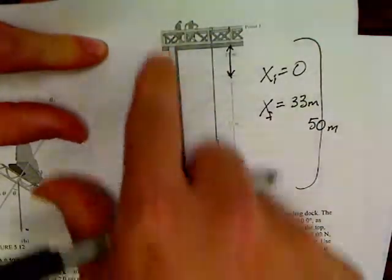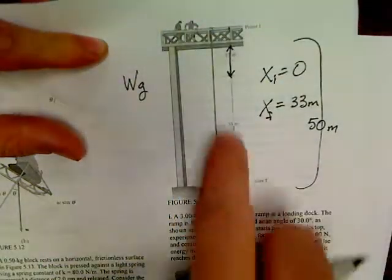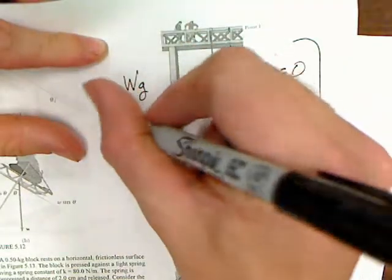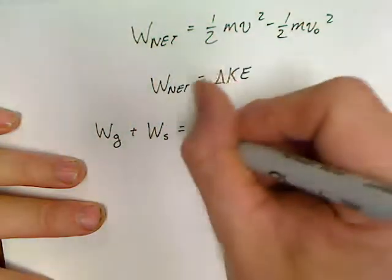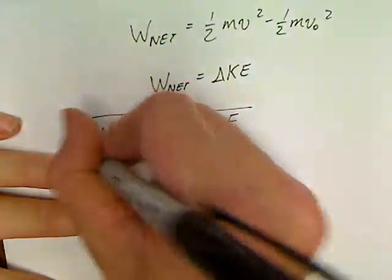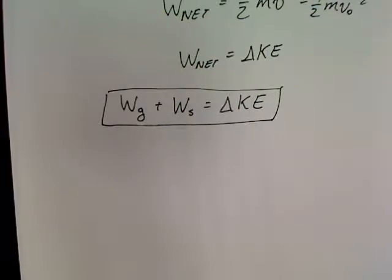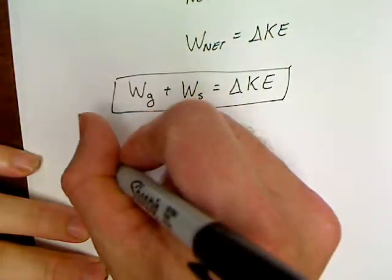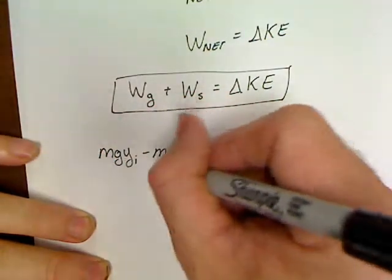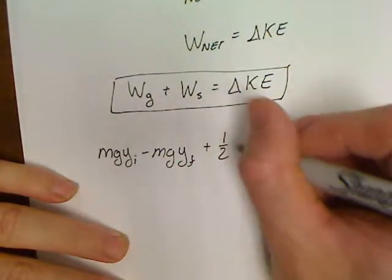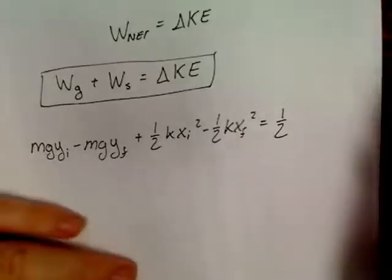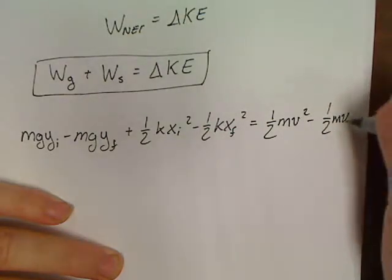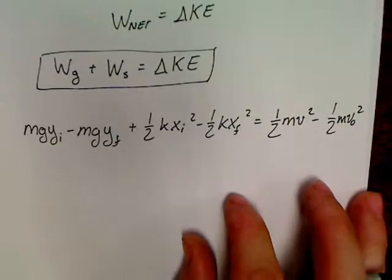Work net equals delta KE. What's the only kind of work being done? He fell, so that means we've got work being done by gravity, but he's attached to a gigantic spring, a rubber band, so we've got two types of work being done: work by gravity and work by spring. That's the physics to work the bungee cord question.